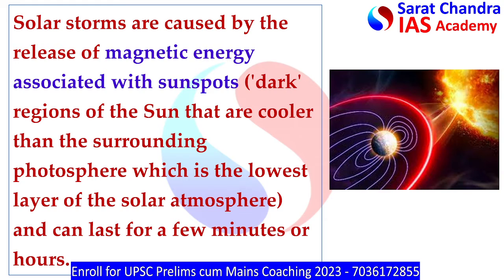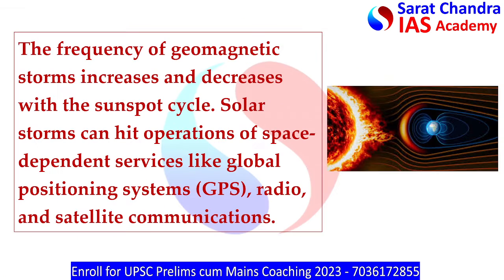Solar storms are caused by release of magnetic energy associated with sun storms and can last for a few minutes or hours. The frequency of geomagnetic storms increases and decreases with the sunspot cycle.